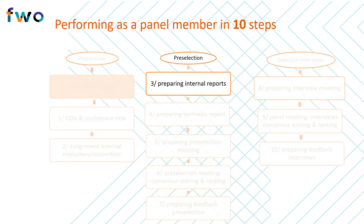The second phase of the evaluation process consists of the pre-selection and the preparation of this important meeting. This phase begins with panel members writing the internal review reports assigned to them, making an independent assessment of the application using the scoring grid provided by FWO. For each application, two panel members write an internal review, and simultaneously two on-topic experts prepare an external review. In step 4, the rapporteur integrates the four reviews into a synthesis report, using FWO's scoring grid and issuing a score for all predetermined criteria.